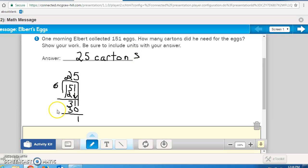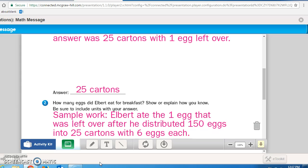Remember, the one egg left over, he said he was going to eat. So problem 2 says, how many eggs did Albert eat for breakfast? Well, remember he ate the one egg that was left over. Show or explain how you know and be sure to include units with your answer. That is exactly what we did. We said 150 eggs into 25 cartons with 6 eggs each. Please write these answers in to finish off Math Journal page 201 and then continue the recording.